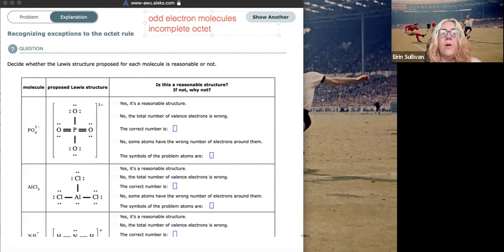Incomplete octets are very common for group 13 elements, like boron, aluminum, gallium, etc. Beryllium as well, in group two. Just keep an eye out for that. And if you're not sure, you can always check formal charges, and formal charges can make you feel comfortable that everything is A-OK.